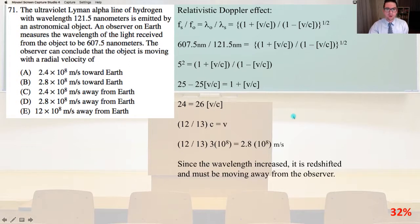So 5 squared equals 1 plus the quantity V over C divided by the whole quantity 1 minus the quantity V over C. So 25 minus 25 V over C equals 1 plus V over C. So 24 equals 26 V over C.